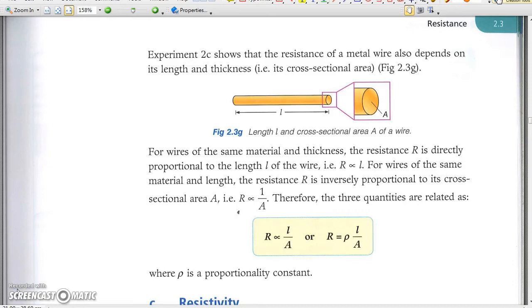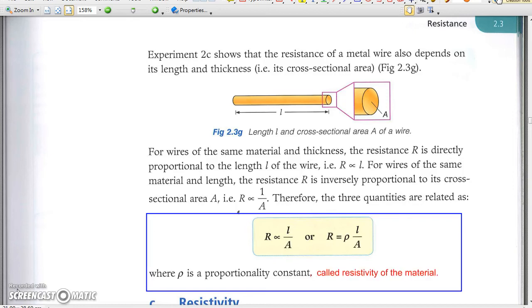Double the length of a resistance wire is the same as adding an identical resistor in series. Hence, its resistance is directly proportional to the length of wire. A larger cross-section area is like having a similar resistor connected in parallel, hence resulting in smaller resistance.